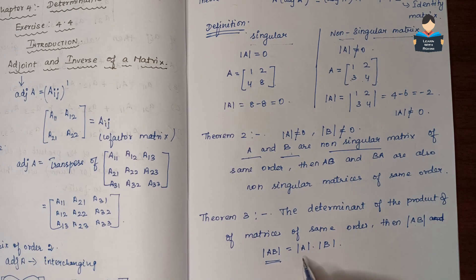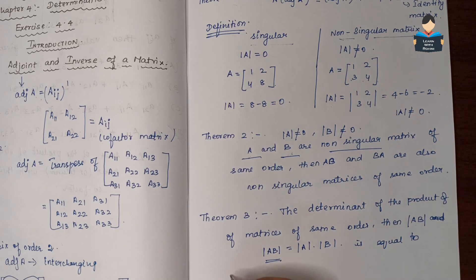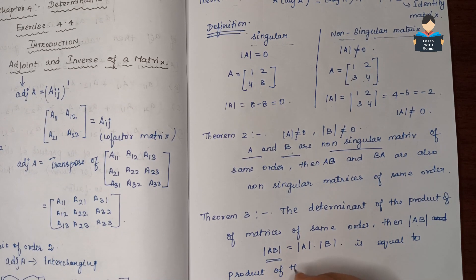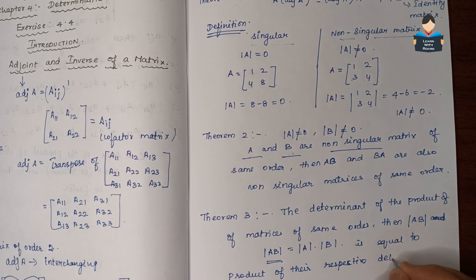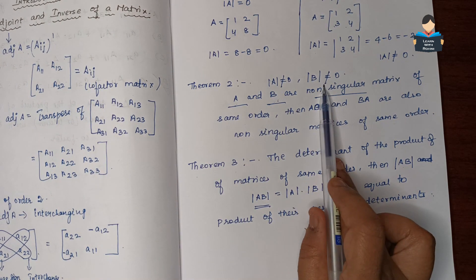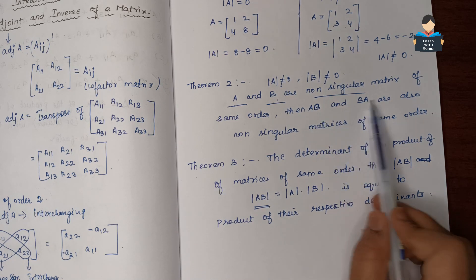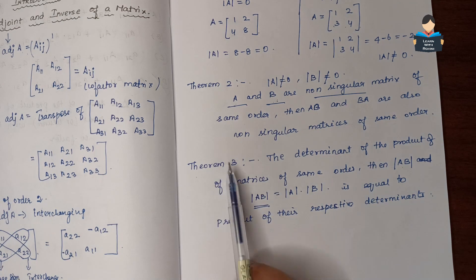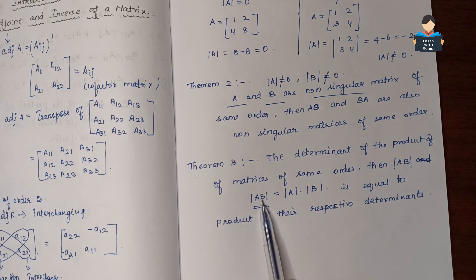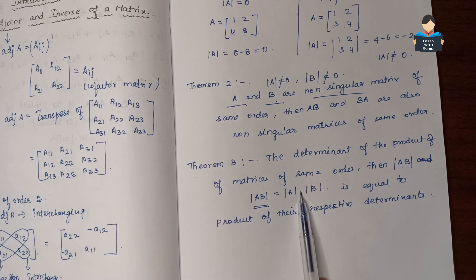Theorem 3: The determinant of the product of matrices equals the product of their respective determinants. That is, det(AB) = det(A) × det(B). So this is Theorem 3: A into Adjoint of A equals Adjoint of A into A equals determinant of A into I.